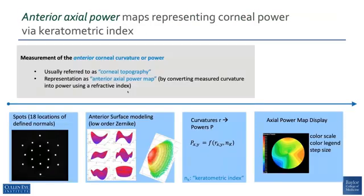Anterior axial power maps representing corneal power are calculated using the keratometric index to give an estimation of total corneal power. You start with the LEDs, they undergo a modeling process and computations, and an axial power map is displayed from the LEDs.